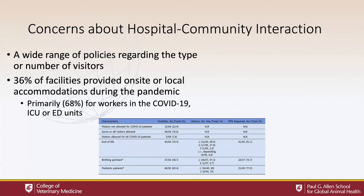In these hospitals, there was also significant concern about hospital-community interaction, visible in the variety of visitor policies. Some hospitals prohibited all visitors; some allowed one person for end-of-life situations; birthing partners were often restricted to one person; pediatric patients sometimes had one parent allowed. Generally, visiting was extremely constrained in most hospitals. 36% of facilities provided on-site or local accommodation during the pandemic, primarily for workers in COVID-19, ICU, or emergency department units — helping healthcare workers avoid bringing disease back to their families, while also shielding them from community spread to keep them operational during very high demand periods.